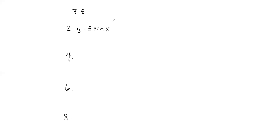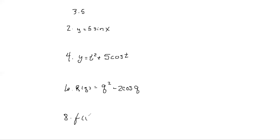Problem 2: y = 5·sin(x). The derivative of sin(x) is cos(x) — this is a memorization rule. With the constant 5 out front, y' = 5·cos(x).